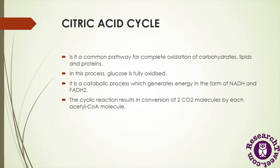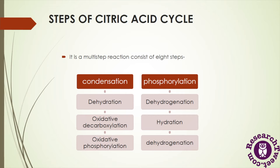The cyclic reaction of the citric acid cycle results in the conversion of two molecules of carbon dioxide by each molecule of acetyl coenzyme A. The Krebs cycle is a multi-step reaction which completes in eight steps, including condensation, dehydration, oxidative decarboxylation, oxidative phosphorylation, phosphorylation, dehydrogenation, hydration, and dehydrogenation. We will discuss all eight steps in detail.